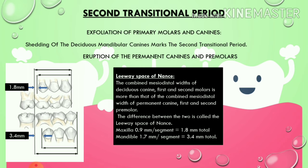Now switching to the second transitional period. The first event is exfoliation of primary canines and molars, followed by eruption of their permanent successors — permanent canines and premolars. Here we encounter the leeway space of Nance. The combined mesiodistal widths of the deciduous canine, first and second molars are greater than the combined mesiodistal widths of the permanent canine, first and second premolars.